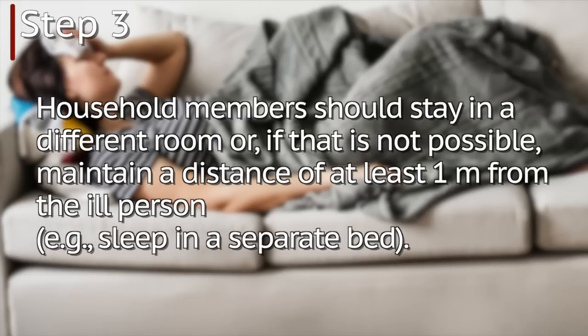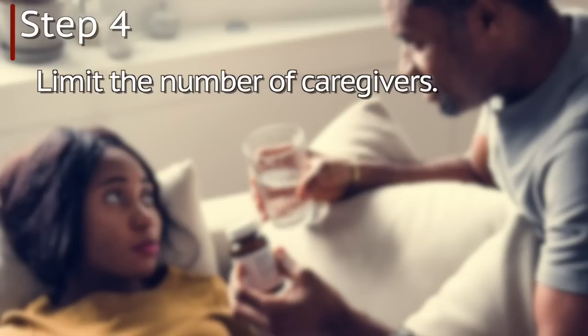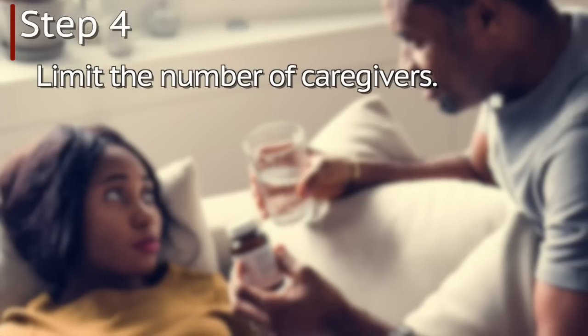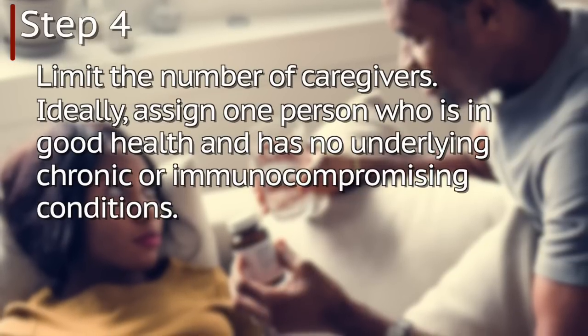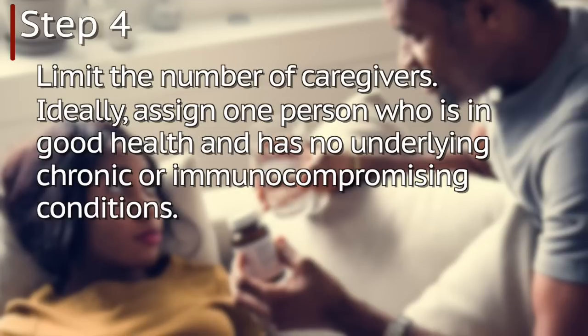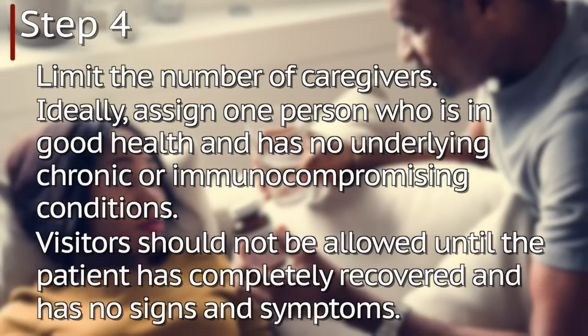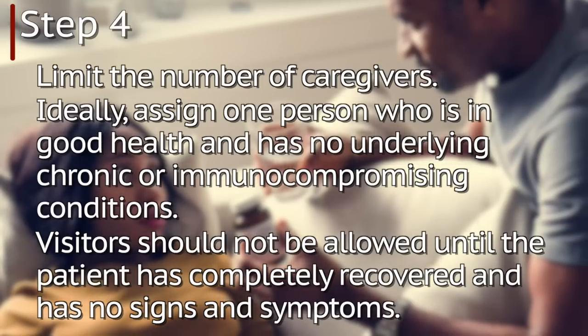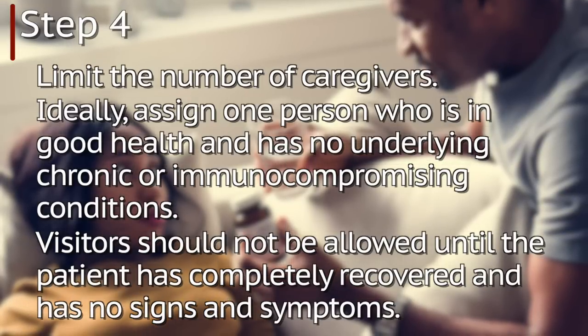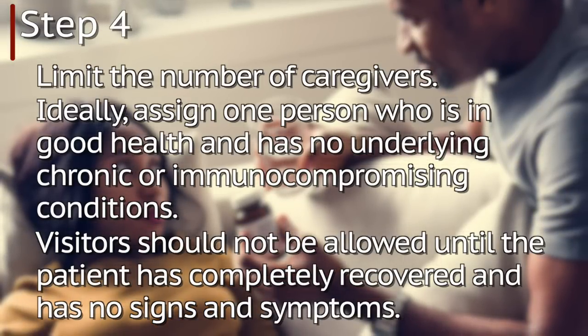Step three: household members should stay in a different room or, if that's not possible, maintain a distance of at least three feet from the ill person — for instance, sleep in a separate bed. Step four: limit the number of caregivers. Ideally, assign one person who is in good health and has no underlying chronic or immunocompromising conditions. Visitors should not be allowed until the patient has completely recovered and has no signs and symptoms.